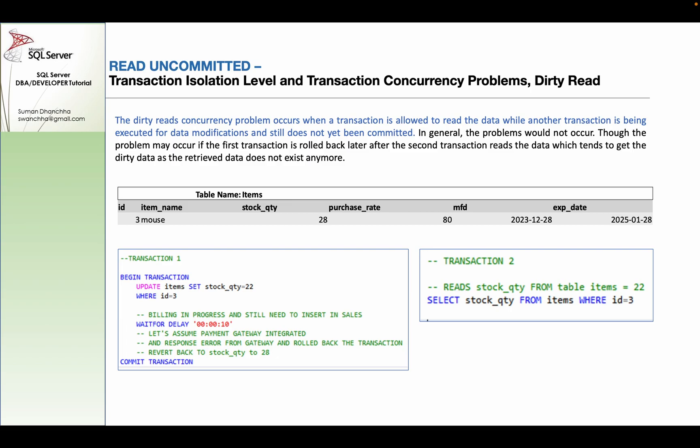With Read Uncommitted, dirty reads are possible. If the first transaction is updating data and has not yet committed or rolled back, the second transaction can read that uncommitted data. Then if the data is committed, you can access that data.